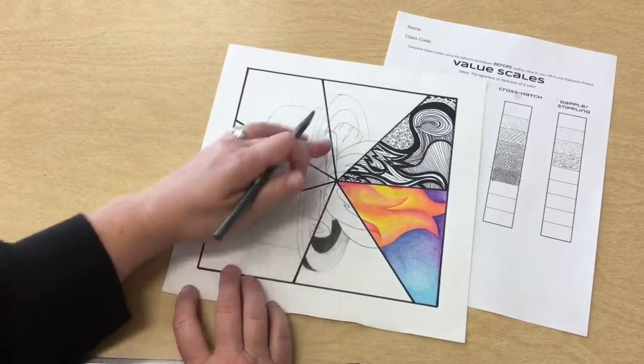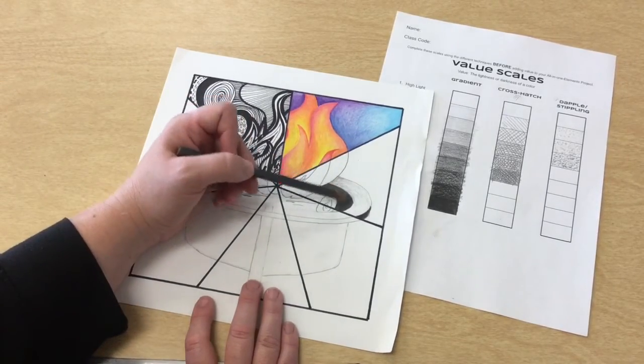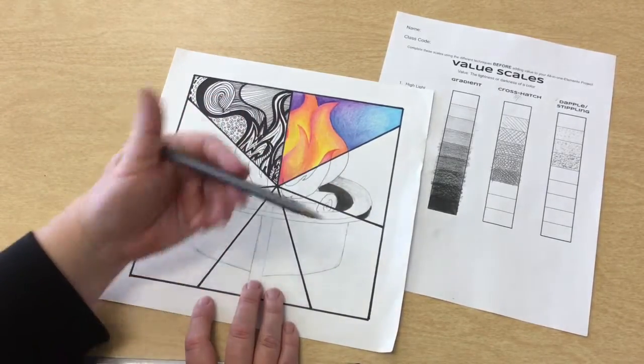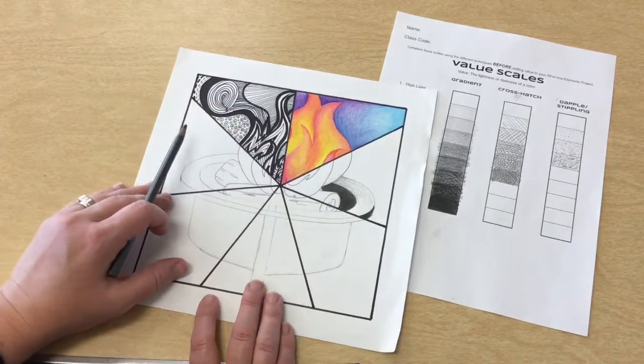And I'm just going to continue this to help bring out the parts that I want to stand out. Things that are lightest are closest to you and tend to stand out. Things that are darkest seem further away and move back on the paper.